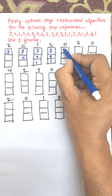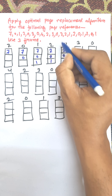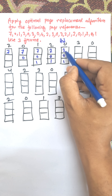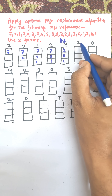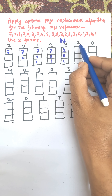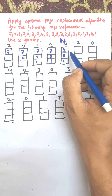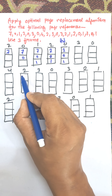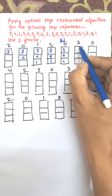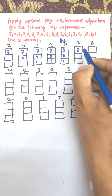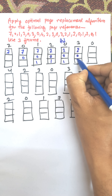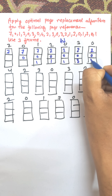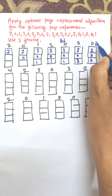0 is available in the frames, so this is a hit. When 3 arrives, from frames 2, 0, 1 we need to determine which to replace. Looking ahead, 0 is found here and 2 is found here, so 1 will be replaced by 3. 0 is still there, so this is a hit.